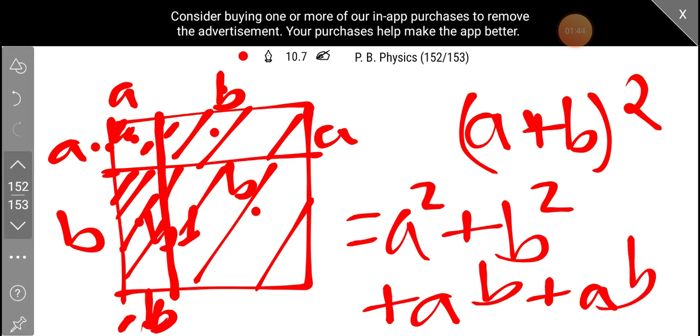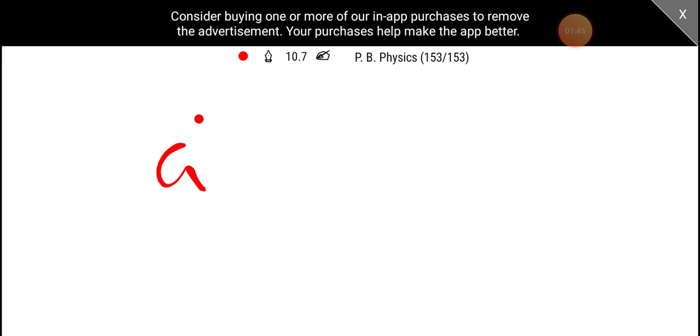Then, what is the area? We have 2AB. Then, A square plus B square plus 2AB.